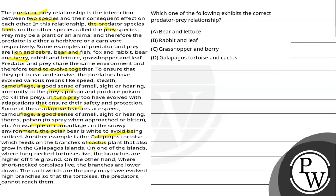On the island where long-necked tortoises live, the branches are higher off the ground. On the other hand, where short-necked tortoises live, the branches are lower down. The cacti, which are the prey, may have evolved higher branches so that the tortoises, the predators, cannot reach them.